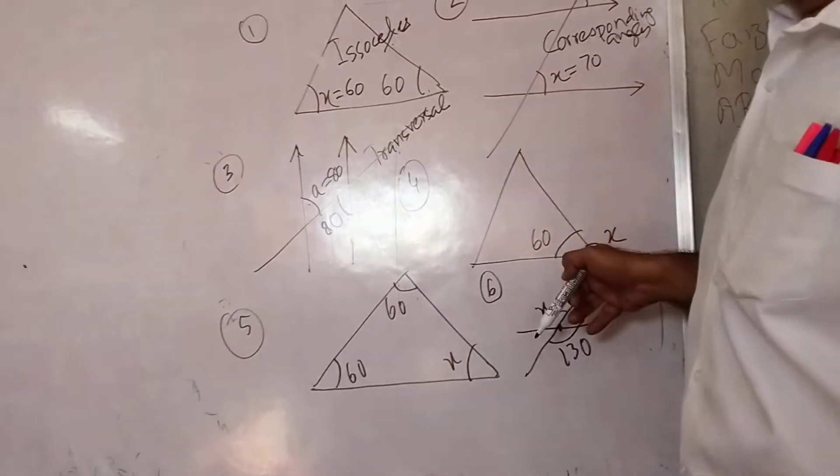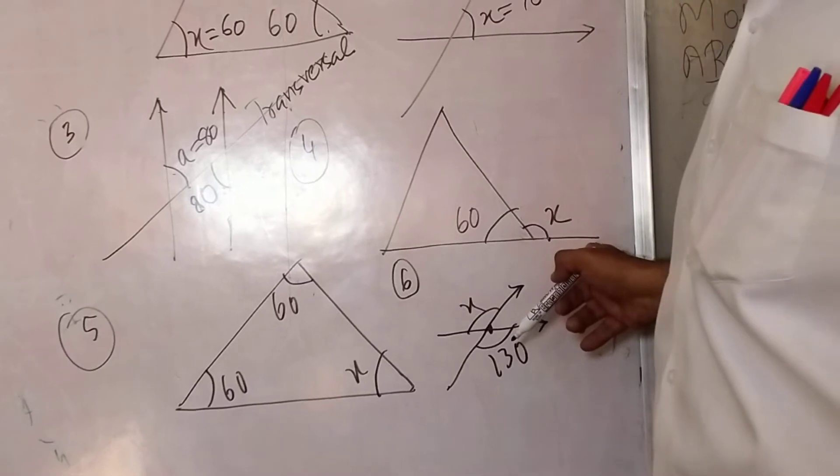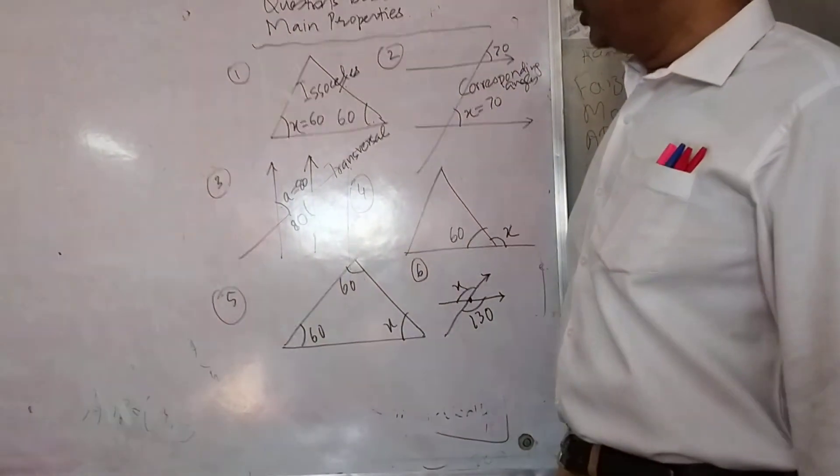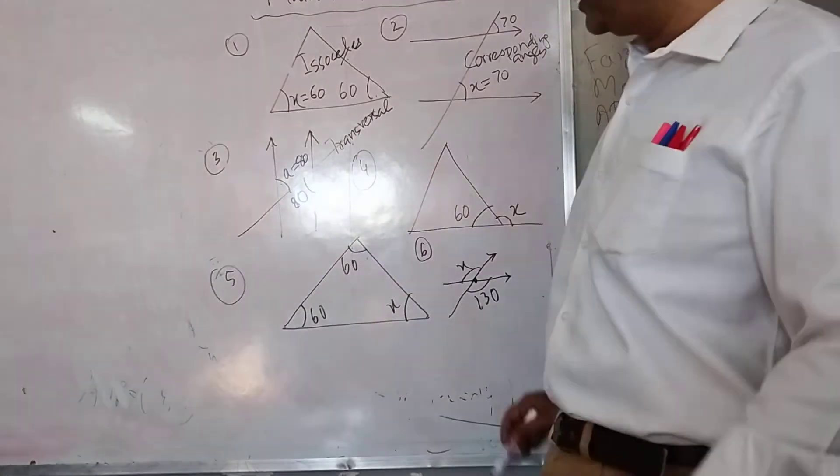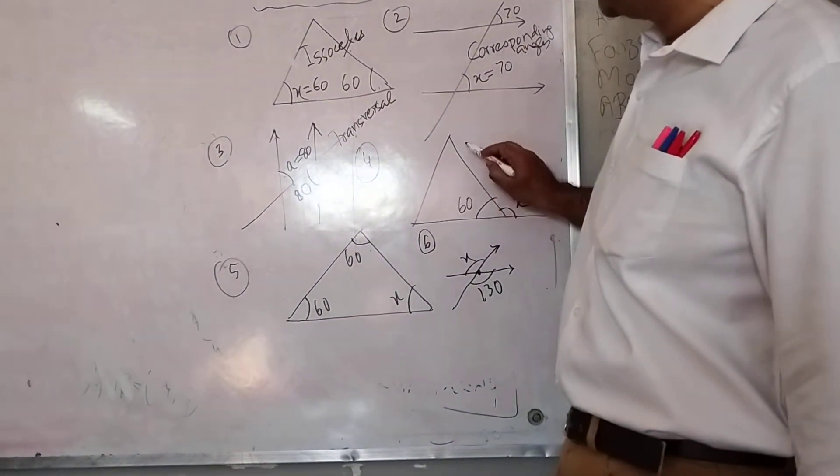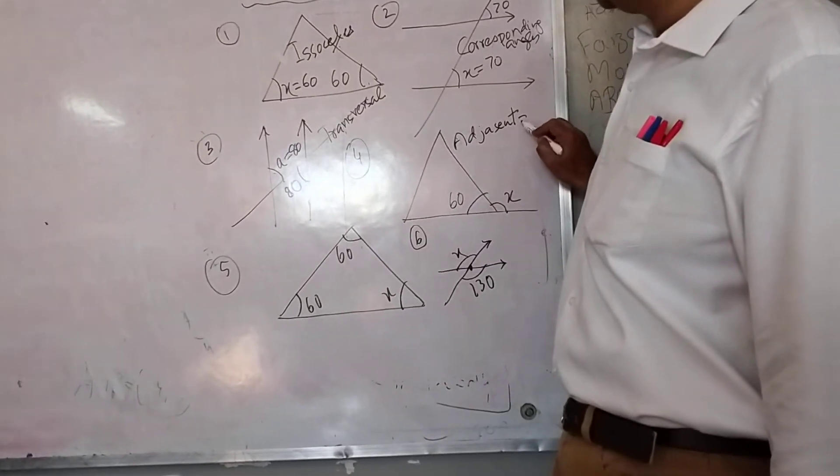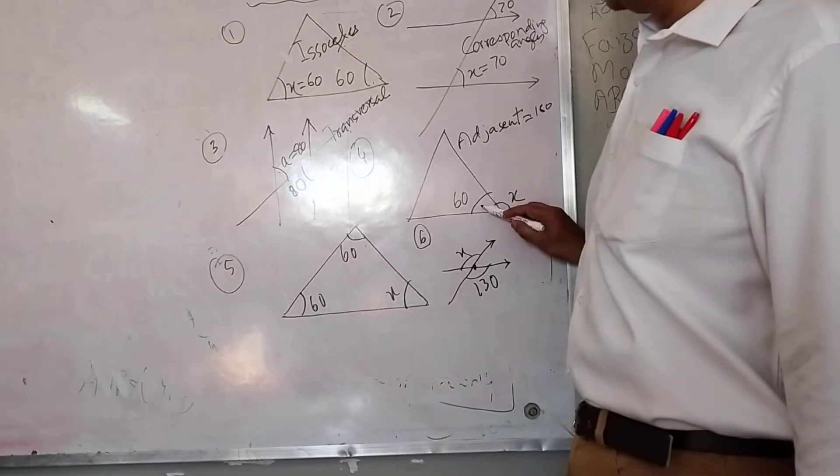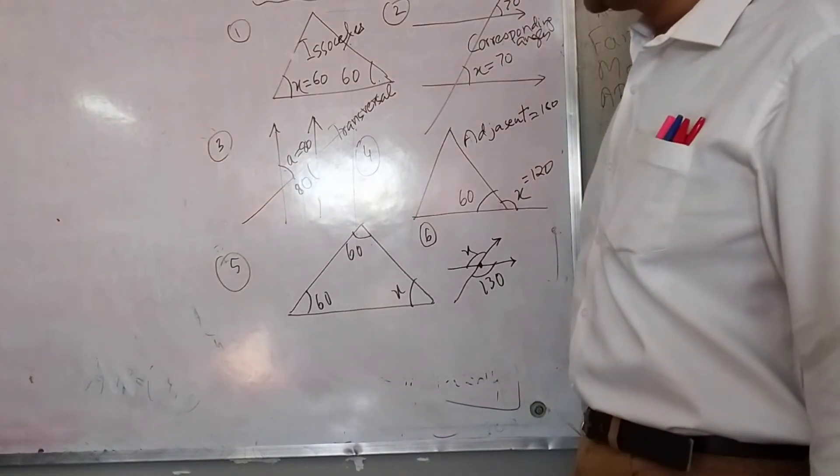Number 4. Although it is a triangle, this is a straight line over here at the base. Sum of all the angles on this straight line is 180, but these angles should be adjacent. Adjacent angles, their sum is 180. So what will be this angle then? Sir, 120. 120. 180 minus 60.